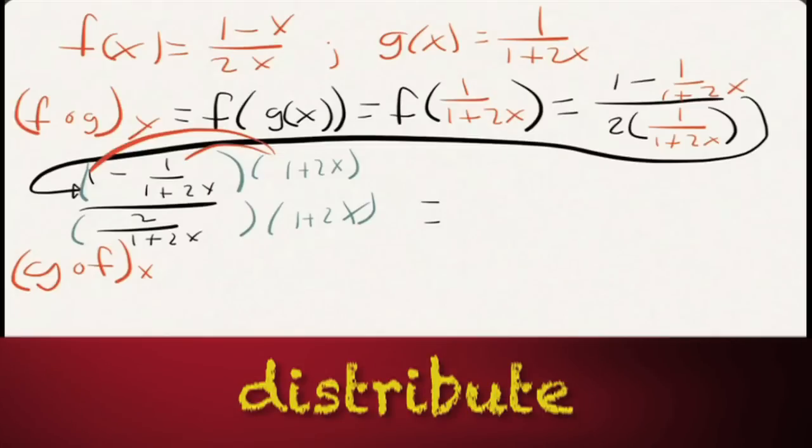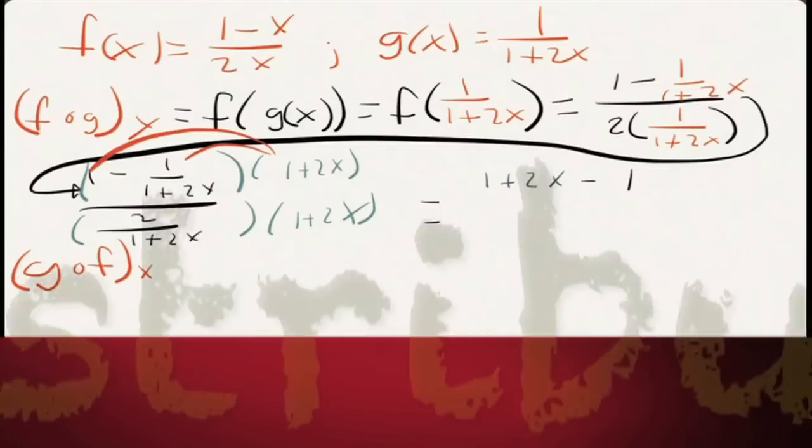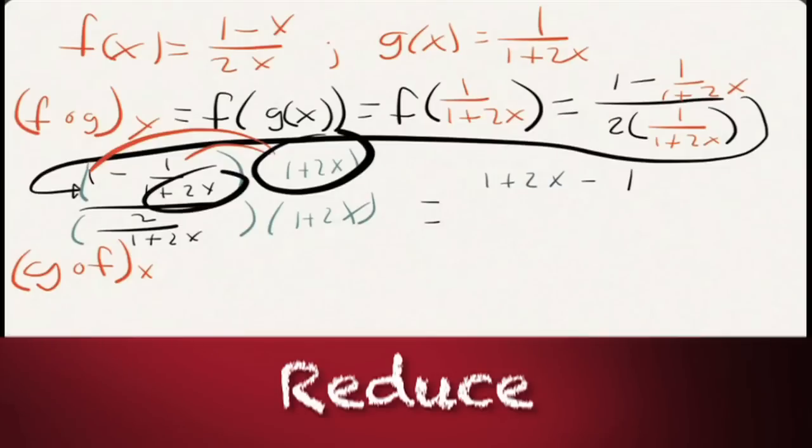And then when we do that, we end up with 1 plus 2x minus 1. And you're like, why? Well, that's because when this guy multiplied by that guy, that product is 1. And that's going to all over. These guys also reduce. And you see you're dividing by a deuce.